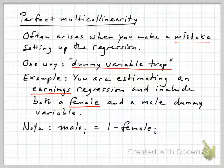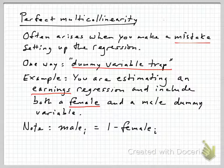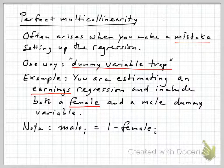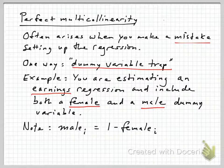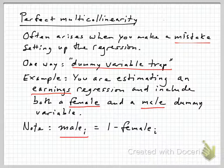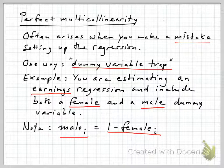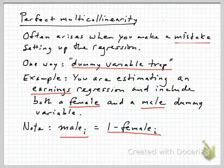So you add a dummy or binary variable for females — that's equal to 1 if the person is female and 0 if they're male. Then you make the classic dummy variable trap mistake and add an additional gender variable for males, equal to 1 if the person is male and 0 if they're female. You can see that these two variables are completely linearly related to each other: the male variable is always simply equal to 1 minus the female variable. Consequently, they contain exactly the same information.